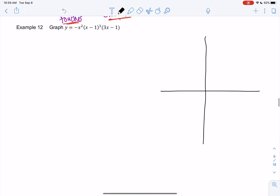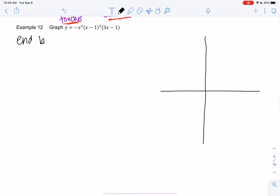So let's see. We have another factored one. I'm not going to multiply this out. Again, it's not worth the effort. But we have negative x squared. We have x minus 1 cubed. And then we have 3x minus 1. So my end behavior is the leading term. If I were to multiply this out, what would be the biggest term? So it would be the biggest powers.